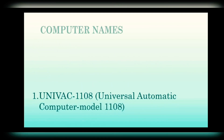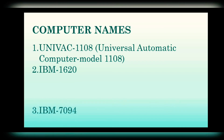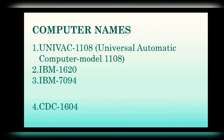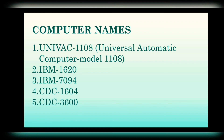Now we will discuss a few examples of this generation of computers. Number 1: UNIVAC 1108 — Universal Automatic Computer Model 1108. Number 2: IBM 1620. Number 3: IBM 7094. Number 4: CDC 1604. Number 5: CDC 3600.